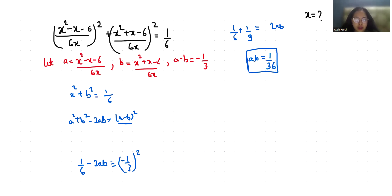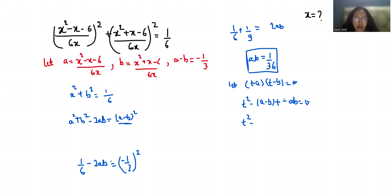Now let (t - a)(t - b) = 0, which gives t² - (a + b)t - ab = 0. Since a - b = -1/3 and ab = 1/36, we multiply through by 36 and the equation becomes 36t² + 12t - 1 = 0.